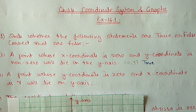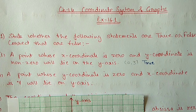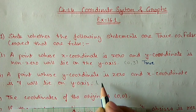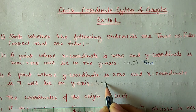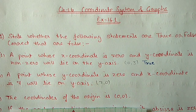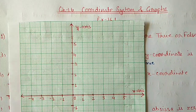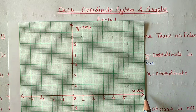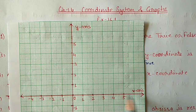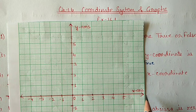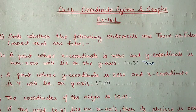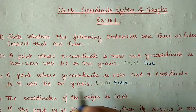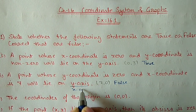Part b: a point whose y-coordinate is 0 and x-coordinate is 7. The point is (7, 0). We check: 7 on the x-axis and 0 on the y-axis — the point lies on the x-axis. The statement says y-axis, so this statement is false. The correct statement is: this point will lie on the x-axis.